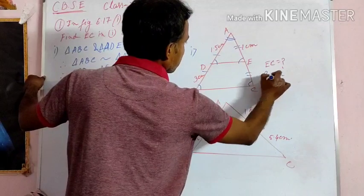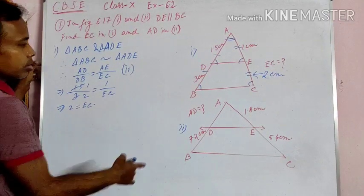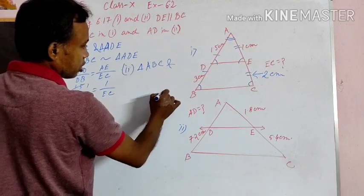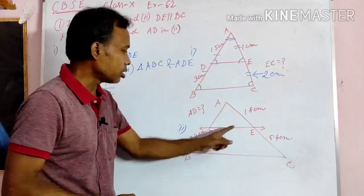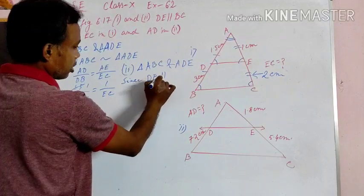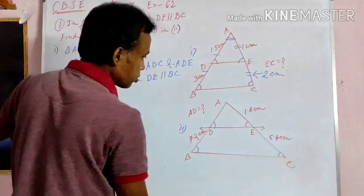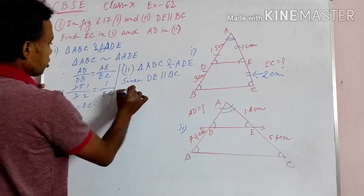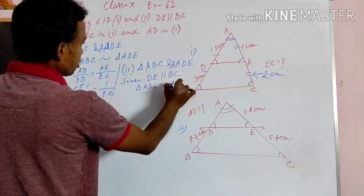Next, Question 2. Here also, in triangle ABC and triangle ADE, since DE is parallel to BC, this angle equals this angle — corresponding angles. This angle equals this angle — corresponding angles. This is a common angle, so all angles are equal. Therefore, triangle ABC is similar to triangle ADE.